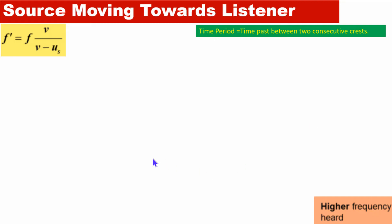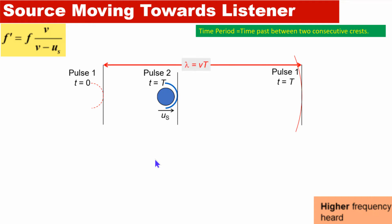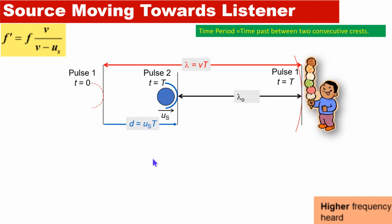First, look at this animation and try to understand what is happening. Now that you have watched the animation, let me explain in a little more detail before we derive the equation. Let's say this is point A, this is point B, and this is point C.